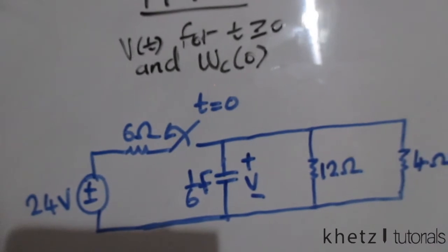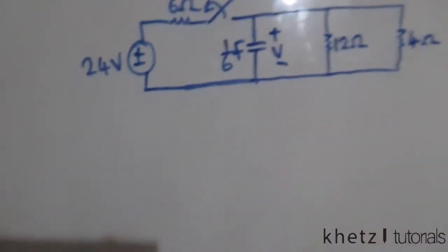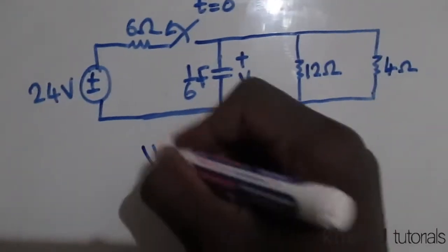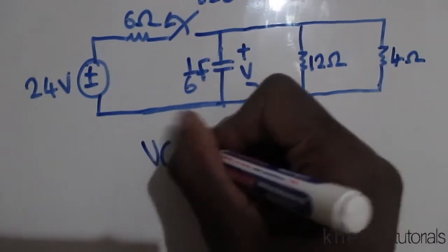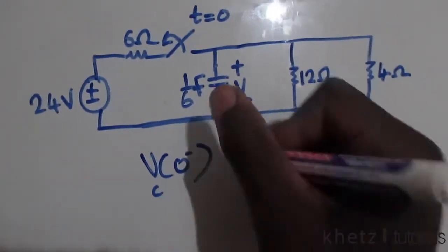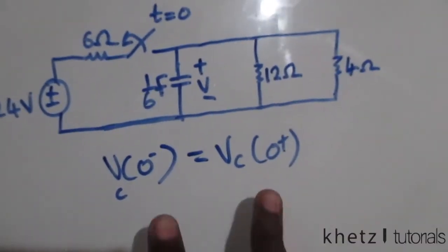Now we know for sure that the capacitor voltage doesn't change abruptly, which means the capacitor voltage just before zero approaches the capacitor voltage just after zero. This is associated with the switching action which is going to take place here.